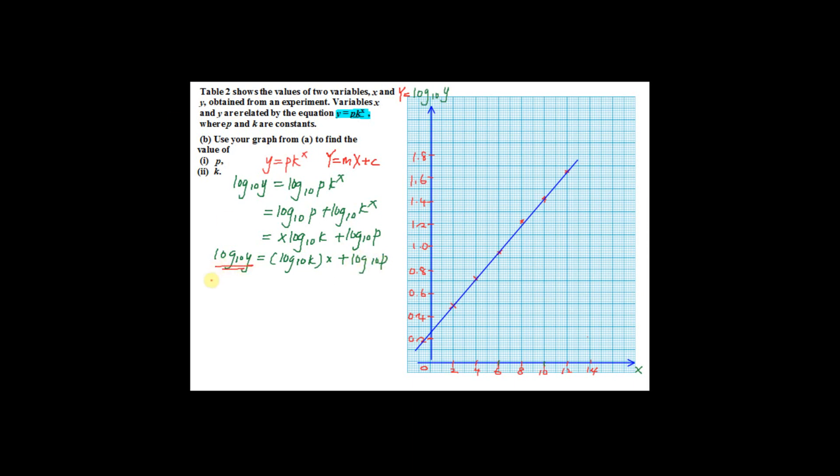Now listen carefully. You already have your big Y. The big Y must be exactly the same as the vertical axis here, which is log 10 y. And you have your big X, which is exactly the same as the horizontal axis. So this is your gradient, that is log 10 k, and log 10 p should be your y-intercept. In this case, it should be the intercept for the vertical axis here.